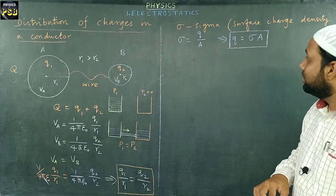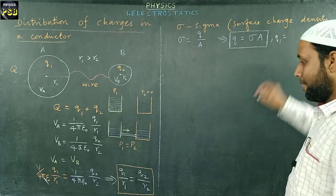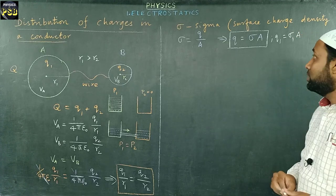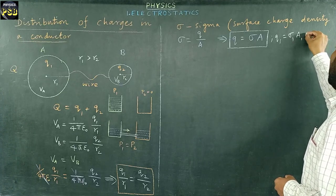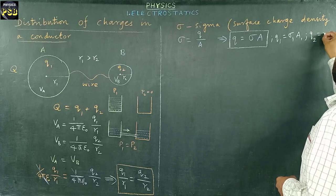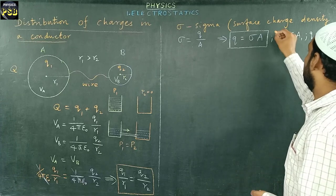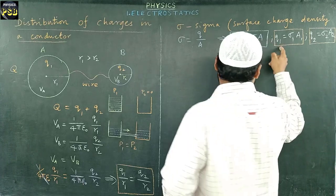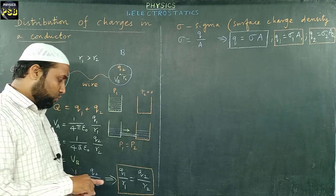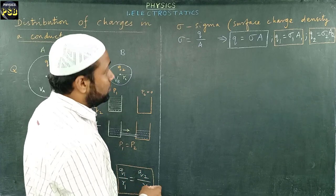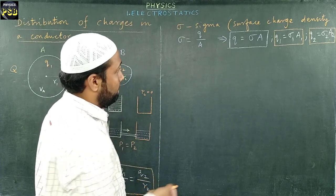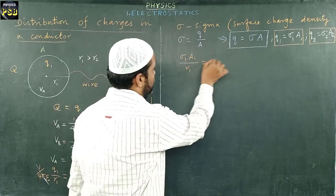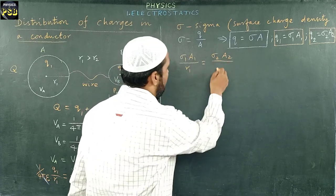By following this expression, Q1 and Q2 are written as: Q1 = σ1·A1 and Q2 = σ2·A2. Substituting into the equation gives σ1·A1/R1 = σ2·A2/R2.